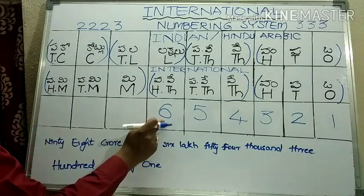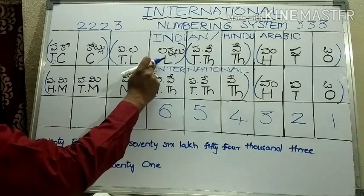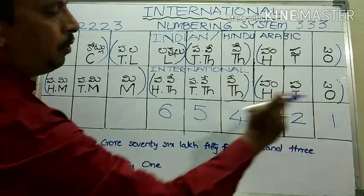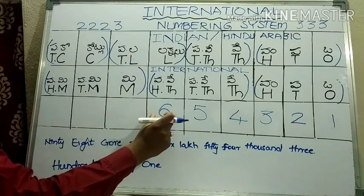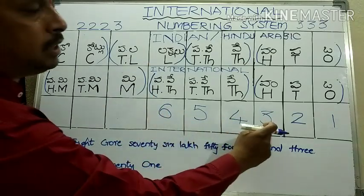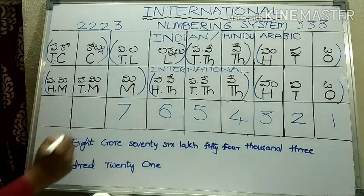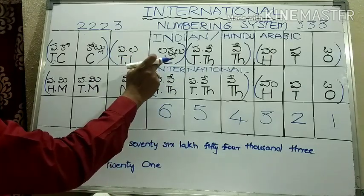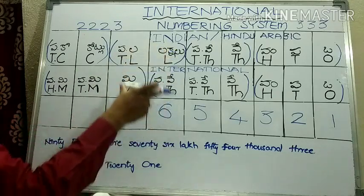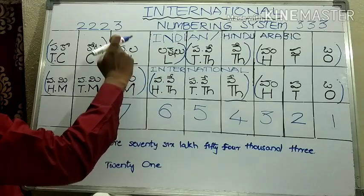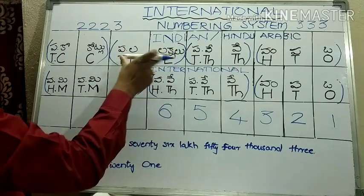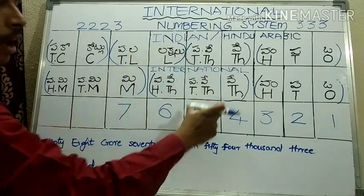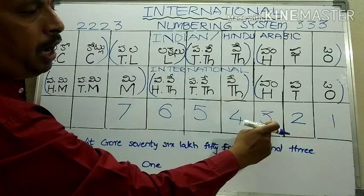Students, this 6 is in the lakhs place in the Indian system. The digits 5 and 4 are in the ten-thousands and thousands places, and 321 follows. So in the Indian system we read this as 6 lakhs, 54,321. Now I will add another digit. In the Indian system there are lakhs and ten-lakhs places in one group, so 76 lakhs — 7 is in the ten-lakhs place and 6 is in the lakhs place — giving us 76 lakhs, 54,321.